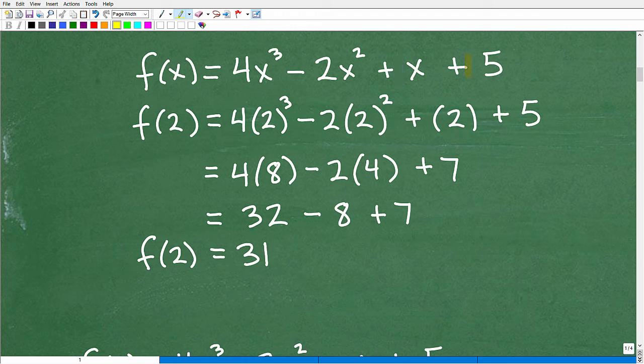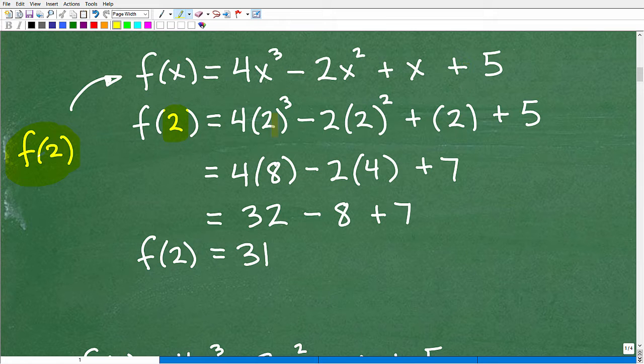Here is the main thing about the remainder theorem. Here is my polynomial function. Let's suppose I say, hey, Mr. Function, I want to evaluate you for 2. In other words, I want to find f of 2 of this polynomial function. Just a pretty typical thing that we do with functions. So to find f of 2, I write it this way, and everywhere there's an x, I plug in my nice little lovely 2 there, and then I go ahead and simplify. So 2 cubed is 8. 2 squared is 4, and this will be 32 minus 8. And so I've determined that f of 2 equals 31.